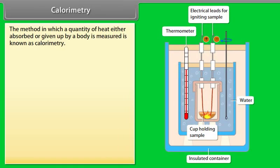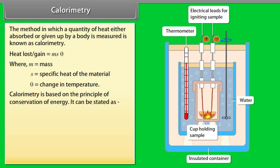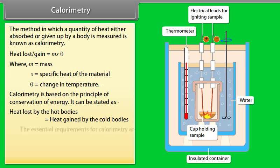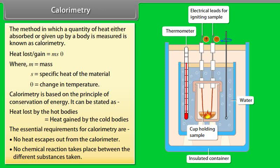Calorimetry: The method in which a quantity of heat either absorbed or given up by a body is measured is known as calorimetry. Heat loss or gain equals M S theta, where M is mass, S is specific heat of the material, and theta is change in temperature. Calorimetry is based on the principle of conservation of energy: heat lost by the hot bodies is equal to heat gained by the cold bodies. Essential requirements: no heat escapes from the calorimeter, and no chemical reactions take place between the different substances.